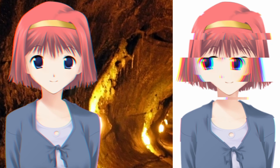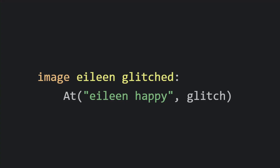There are a few other ways to use these pseudo-transforms, but my personal favorite is by setting it as part of an image definition. Above Label Start, add image, followed by your image name and colon, then on the next line tab over and add at, in parentheses, the image, then a comma, and then either Glitch or Chromatic Offset before closing out the parentheses.